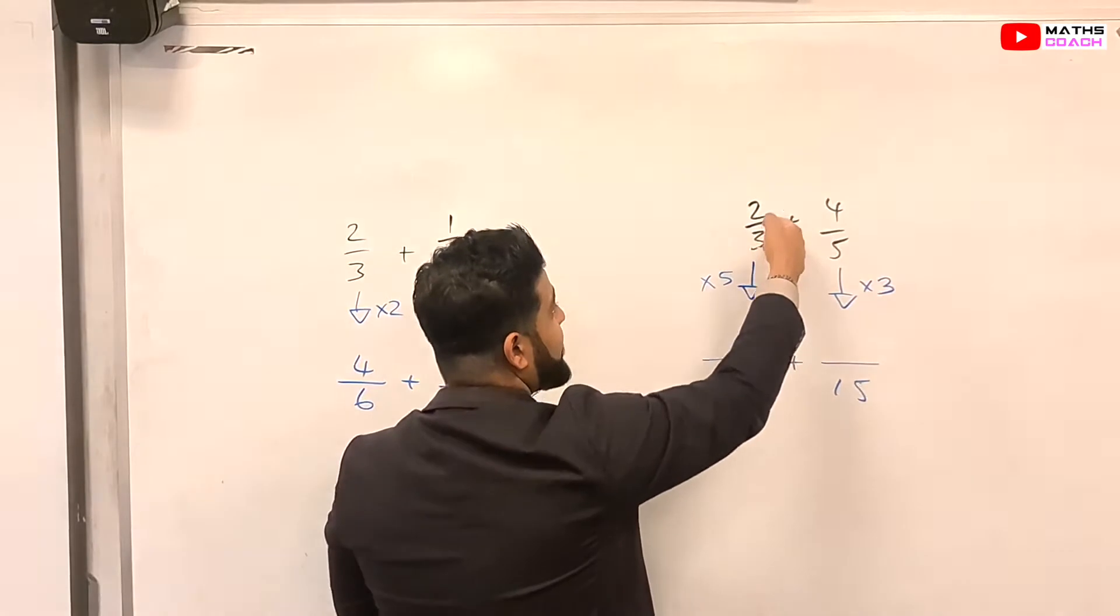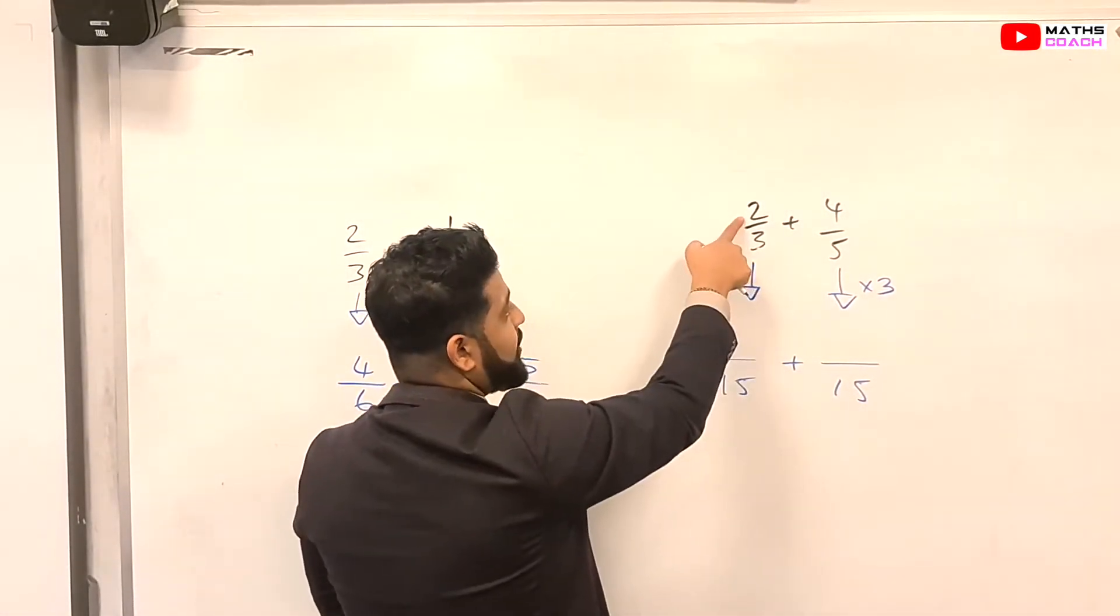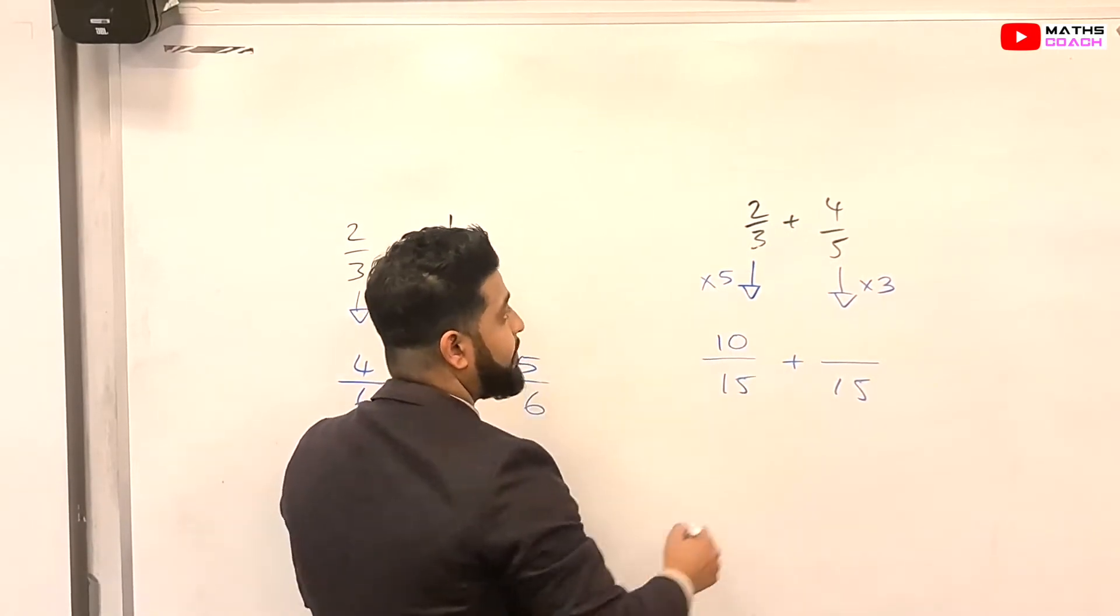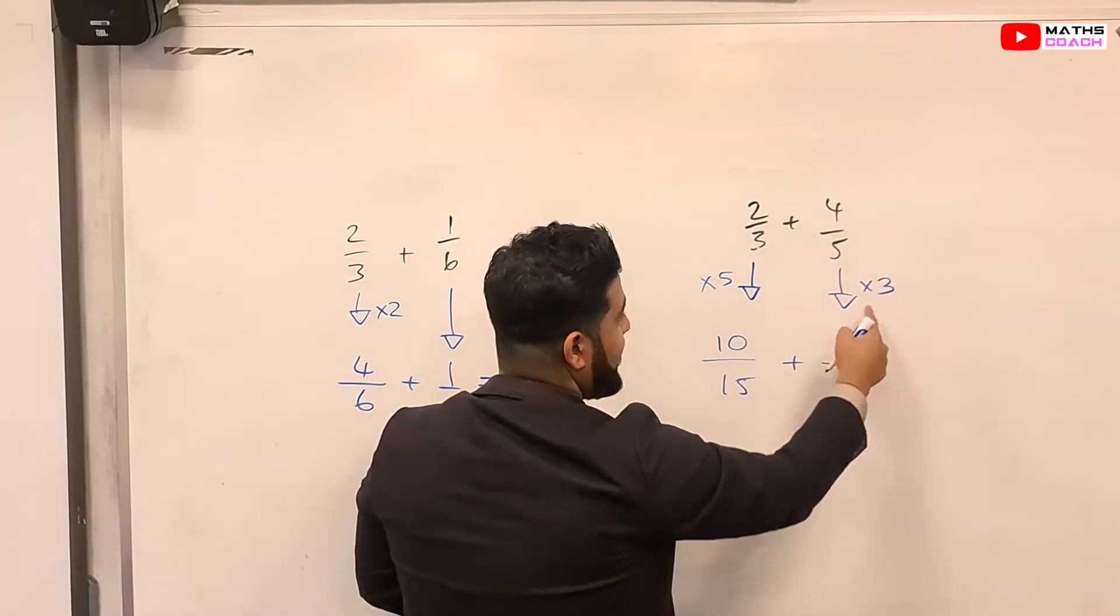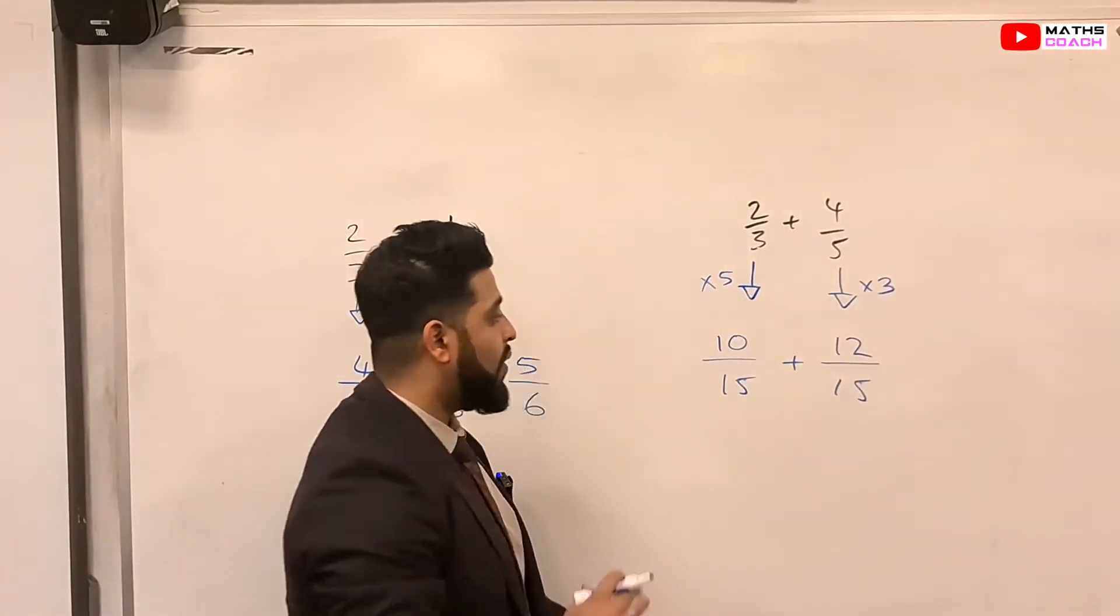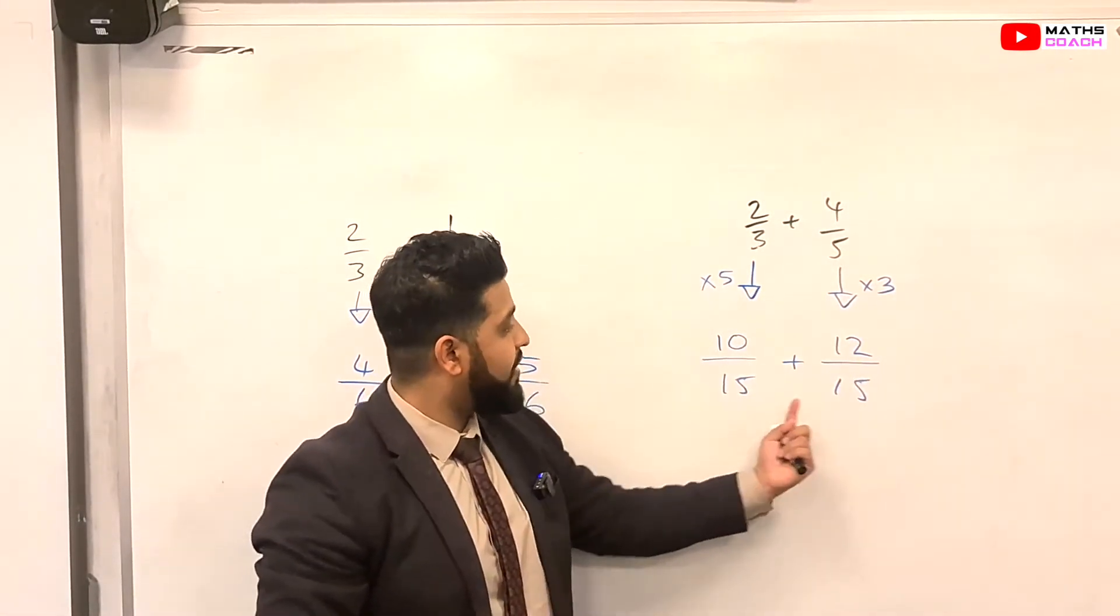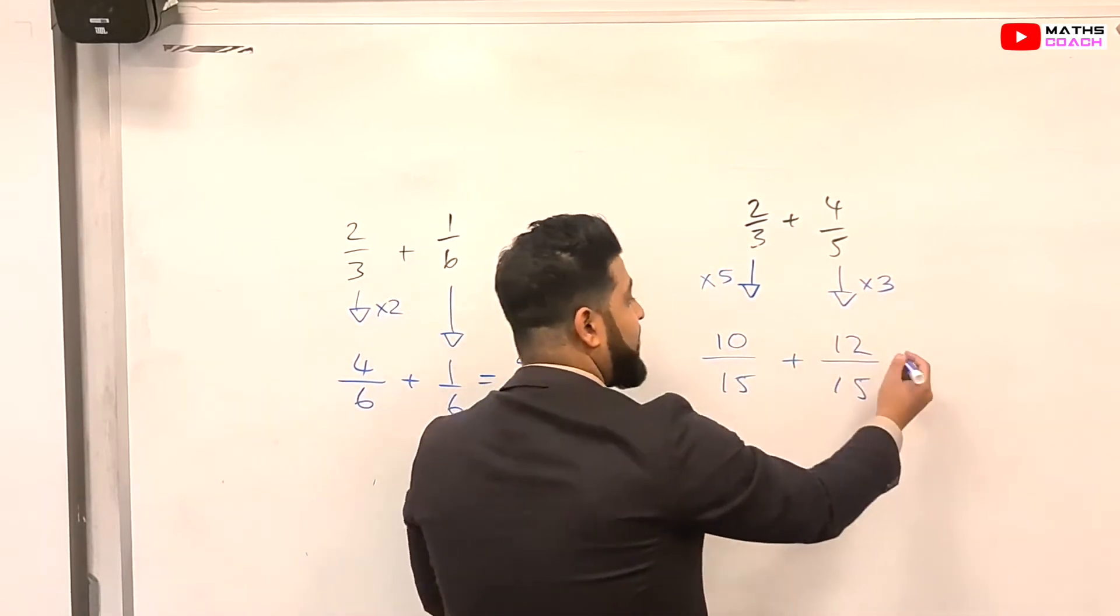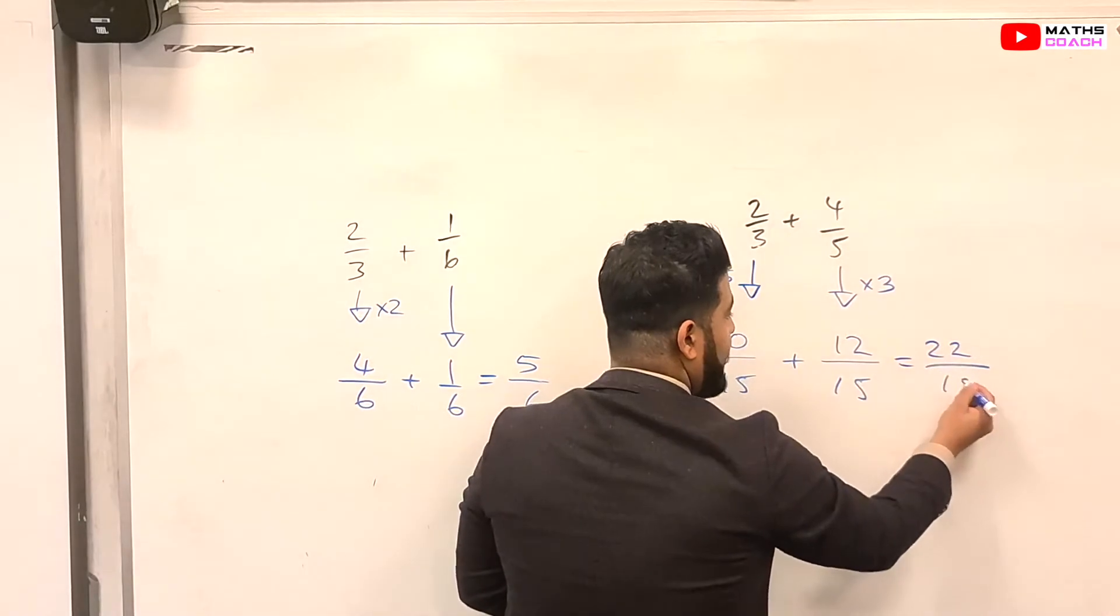Right, so going back to this, we are going to multiply this entire fraction by 5. So we've already done that to get 15. So we multiply the top. So 2 times by 5, which is 10. Here, we're going to multiply the 4 here by 3. So 4 times by 3 equals 12. Once again, we now have two equivalent fractions for these and we have the denominators exactly the same. So we can just add the top along. So 10 plus 12 equals 22 over 15.